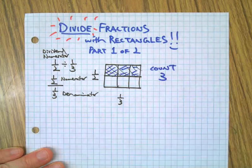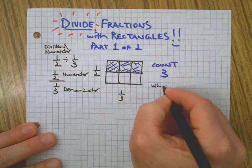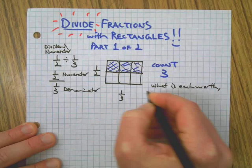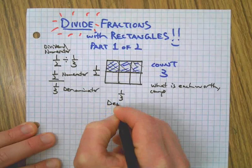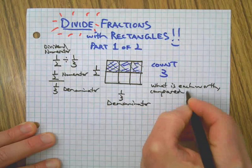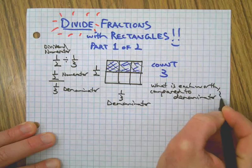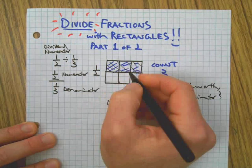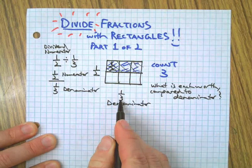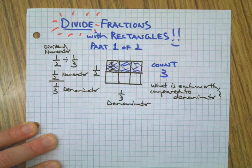We're going to count. Got three of them. Now what does each one of those pieces stand for? What is each worth compared to the denominator? That's the question you ask at this point. The answer is, well, each one of those is worth one-half of that one-third. These are each one-thirds. Each one of these pieces is worth one-half of that.